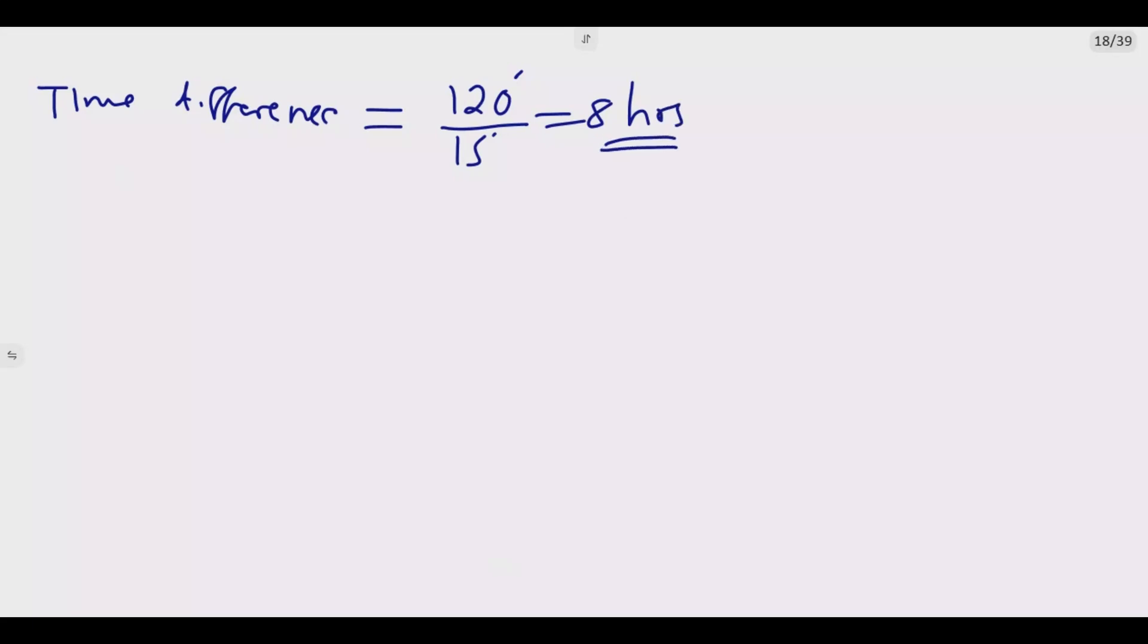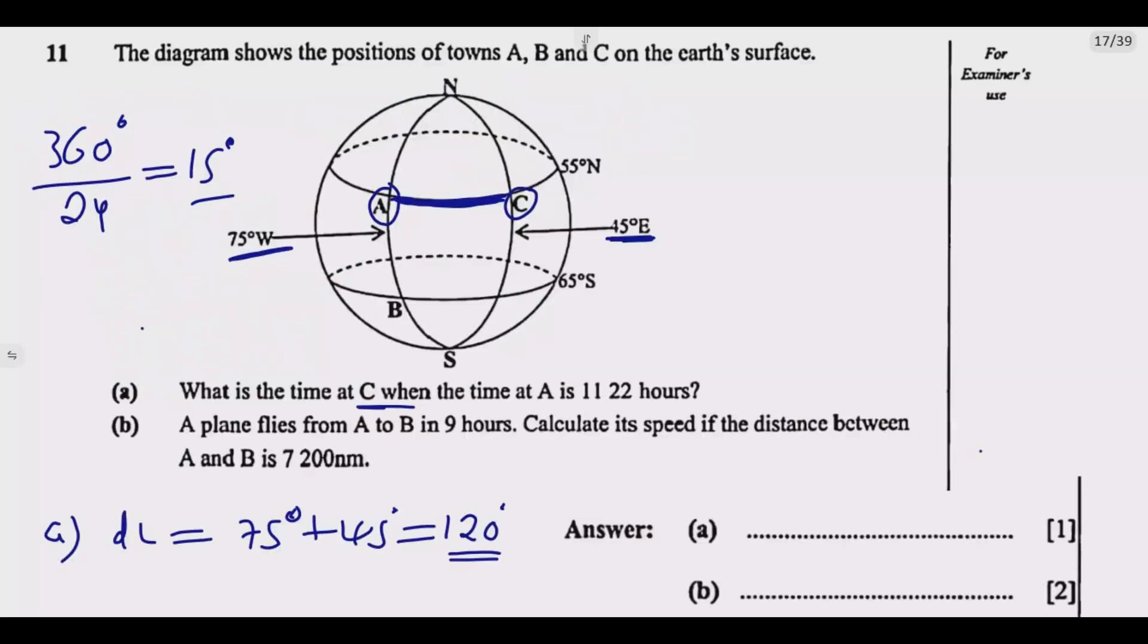So if the time at A we are told is 11:22 hours, then we add 8 hours. This is A. We are going to get 19:22 hours. This will be the time at C. So it will be 19:22 hours. So this is how you answer this question.